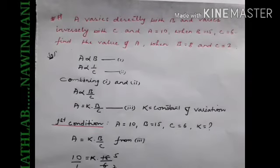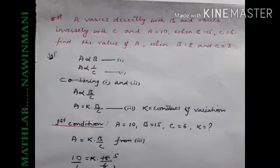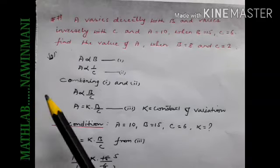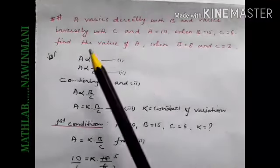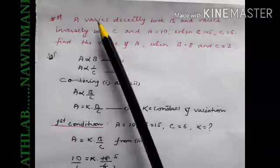We continue with word problems on variation. In this question we have three variables given: A, B, and C. A varies directly with B - that is the first condition given. The second condition is A varies inversely with C.